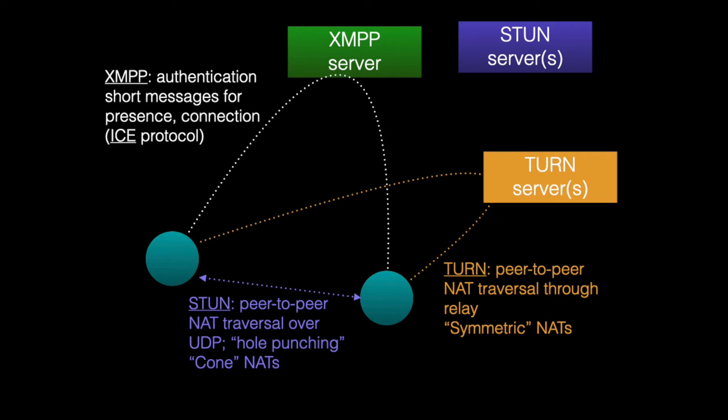Some NATs and firewalls may not support hole punching, so EVO supports a different style of NAT traversal called TURN, which uses a relay between two peers. The process of creating STUN or TURN links is completely transparent to the user and managed automatically by the EVO software.